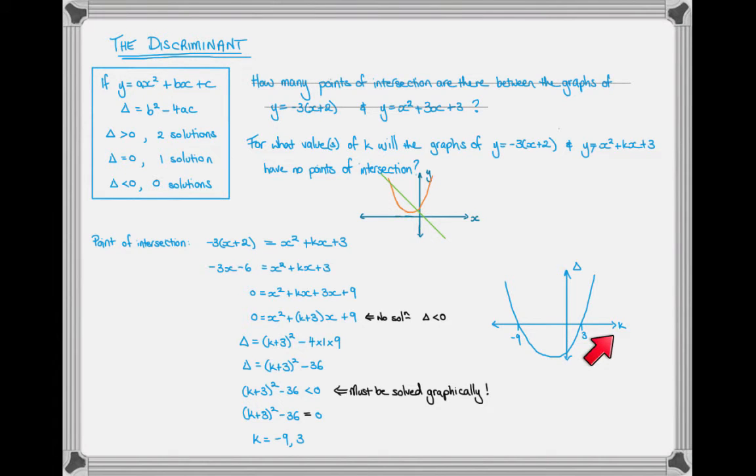We're looking for the values of k where our discriminant, or where our graph, is less than 0. So I'm looking at the numbers that are between negative 9 and 3.